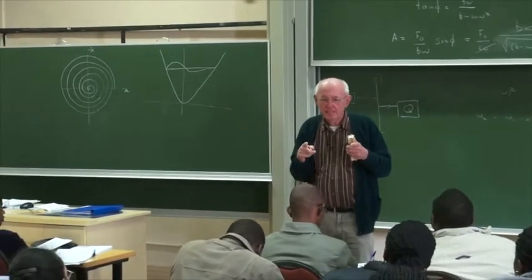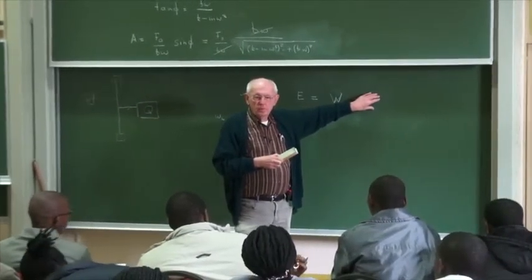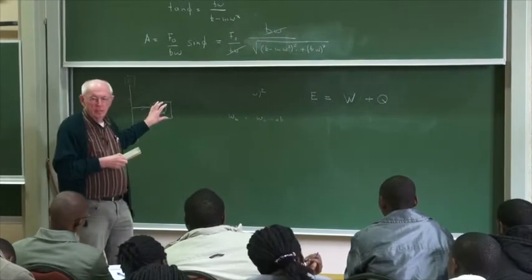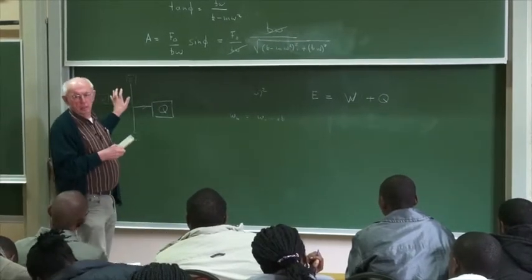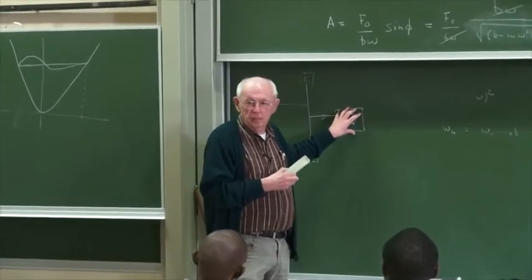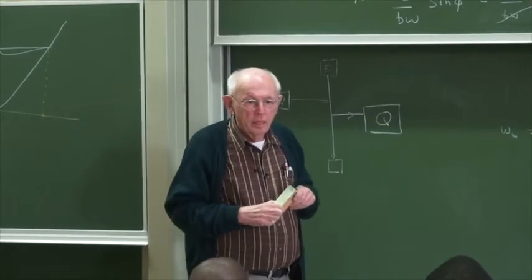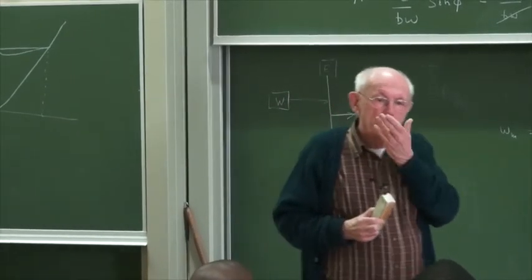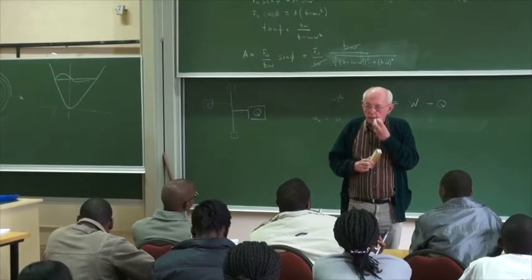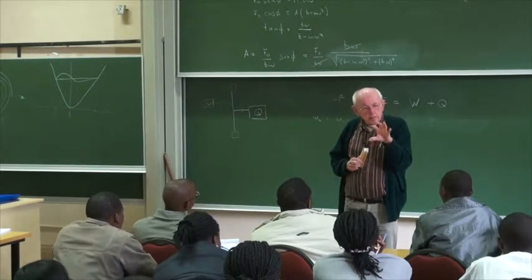The heat Q — the energy lost in such a process — cannot simply be reversed. You can't take the heat that accumulated and subtract it back to get more work out. This is the concept of entropy: the arrow of time is closely related to entropy.